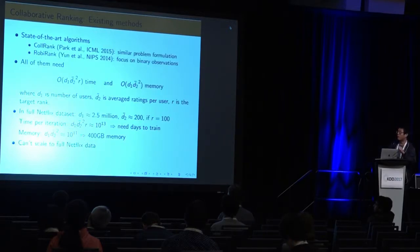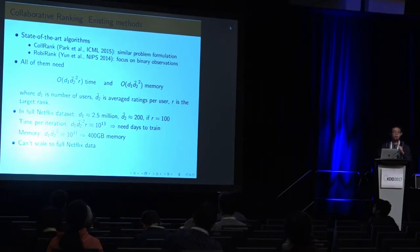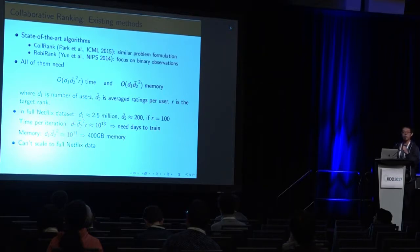This way we achieve better predicting and recommending results, but the shortcoming is that you will be very slow because in the loss function we have many more terms, quadratic terms rather than linear terms. The state-of-the-art algorithm is CoRank from ICML 2015 and Robbie Rand from 2014 from NIPS. All of these previous algorithms require quadratic time and quadratic memory. In the MovieLens data, we have 2.5 million users. If we choose a low-dimensional matrix to be 100, then the time per iteration requires days to train per iteration. The memory will be like 400 gigabyte memory it requires. There's no way to scale up onto the MovieLens data on a single machine.